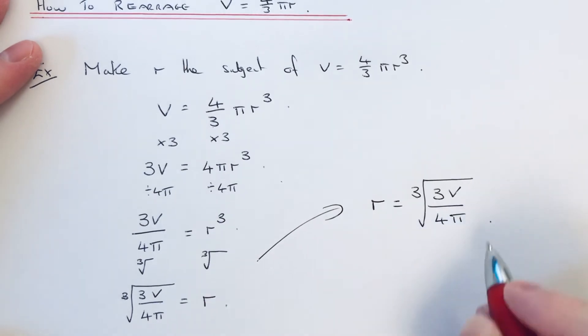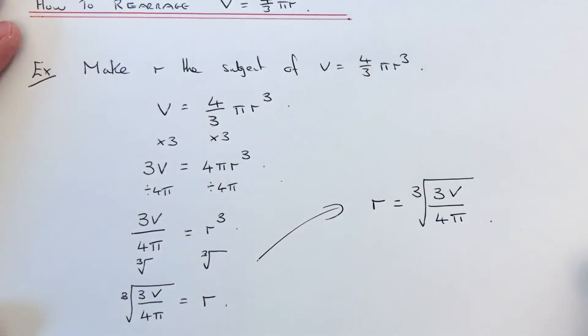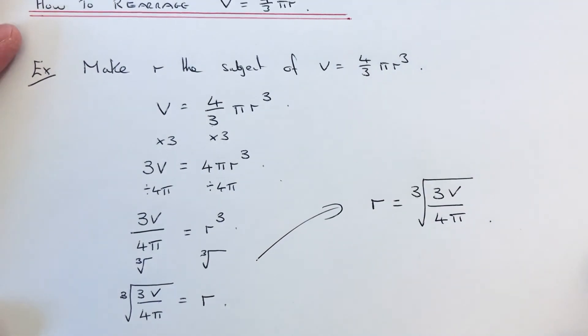So that is the formula for working out the radius of a sphere if you're given the volume.